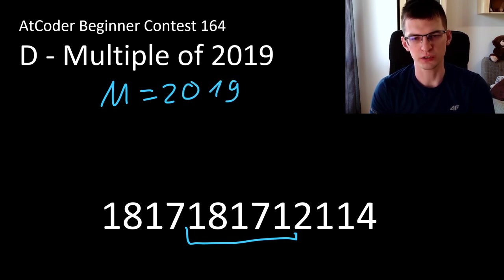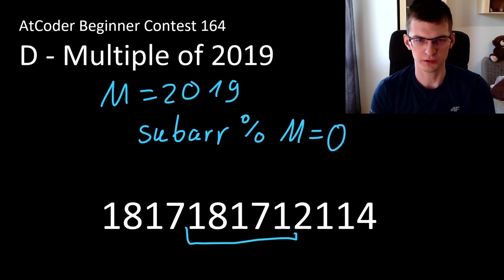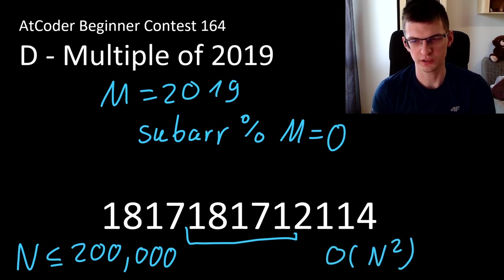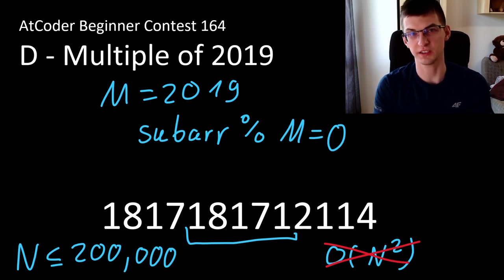In other words, we want this subarray value modulo M to be equal to 0. We need to count those. The given string is very long, up to 200,000, so we cannot use anything that will be O(n²) or slower. Even if you iterate over all subarrays and decide in constant time if it's good, it's still too slow.